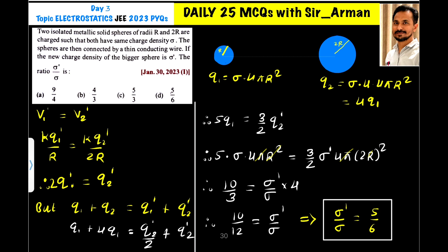Now q2 dash is sigma dash because the charge density of the bigger sphere is given as sigma dash. In the question it is given the new charge density of the bigger sphere is sigma dash. So for the bigger sphere we are keeping as it is.